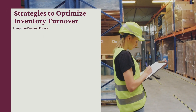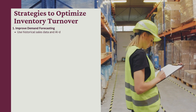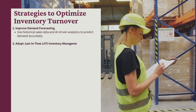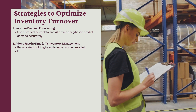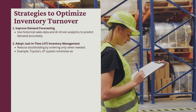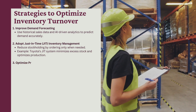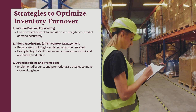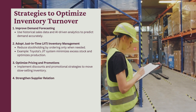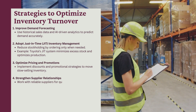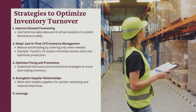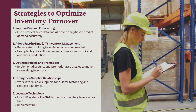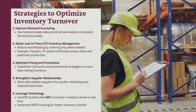Strategies to optimize inventory turnover: 1. Improve demand forecasting — use historical sales data and AI-driven analytics to predict demand accurately. 2. Adopt just-in-time (JIT) inventory management — reduce stockholding by ordering only when needed; Toyota's JIT system minimizes excess stock and optimizes production. 3. Optimize pricing and promotions — implement discounts to move slow-selling inventory. 4. Strengthen supplier relationships for quicker restocking. 5. Leverage technology — use ERP systems like SAP and RFID tracking for real-time inventory visibility.